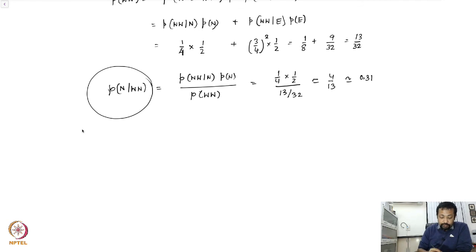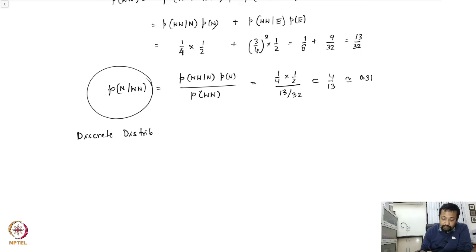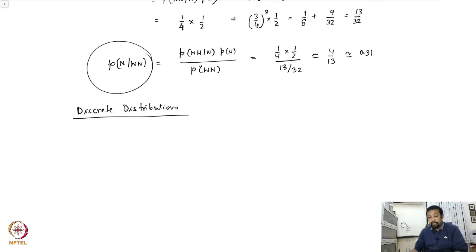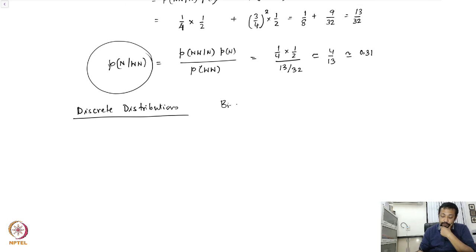Now that we have the bare-bone structures of probability theory ready, we want to look at some examples of probability distributions. We will first consider discrete distributions, since whatever we have been doing so far has discrete outcomes. The classic distribution we will encounter in physics is what is called the binomial distribution.